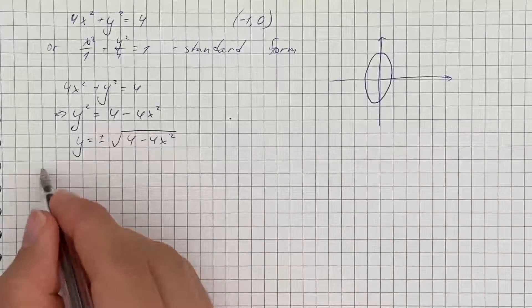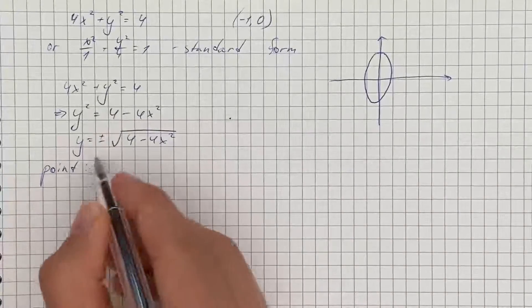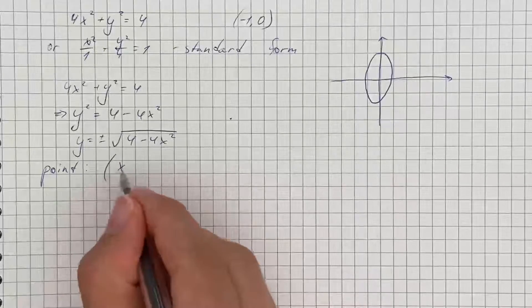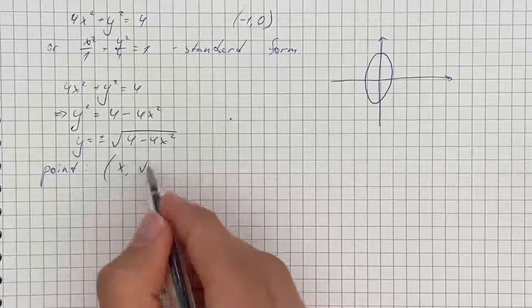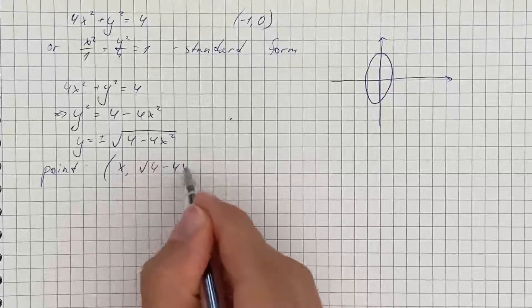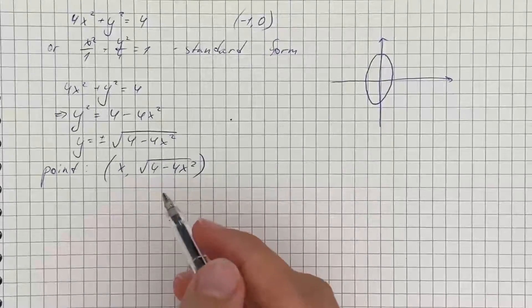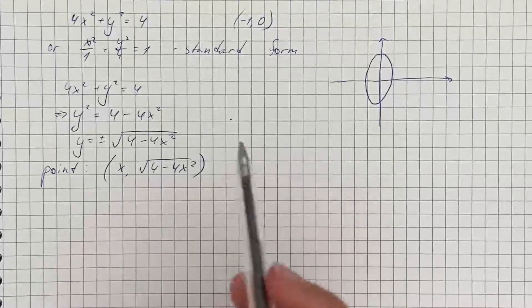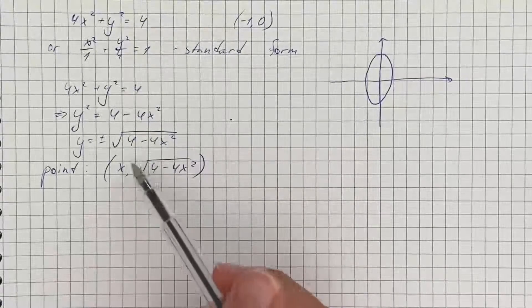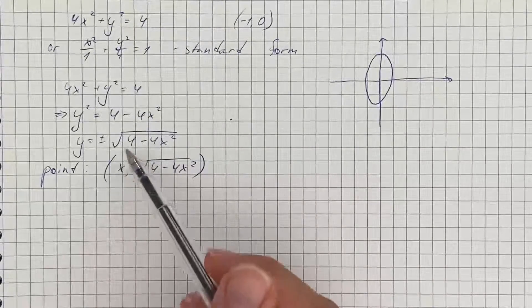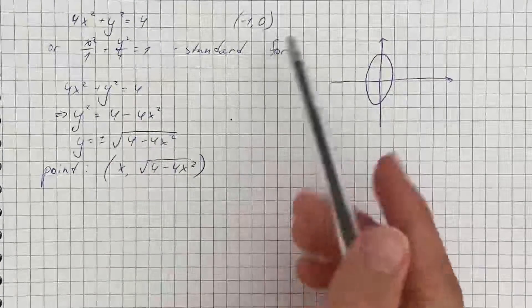So let's call point B, with x as the x-coordinate and square root of 4 minus 4x squared as the y-coordinate. Now we're going to use the distance formula to get the distance from this point to point negative 1, 0.